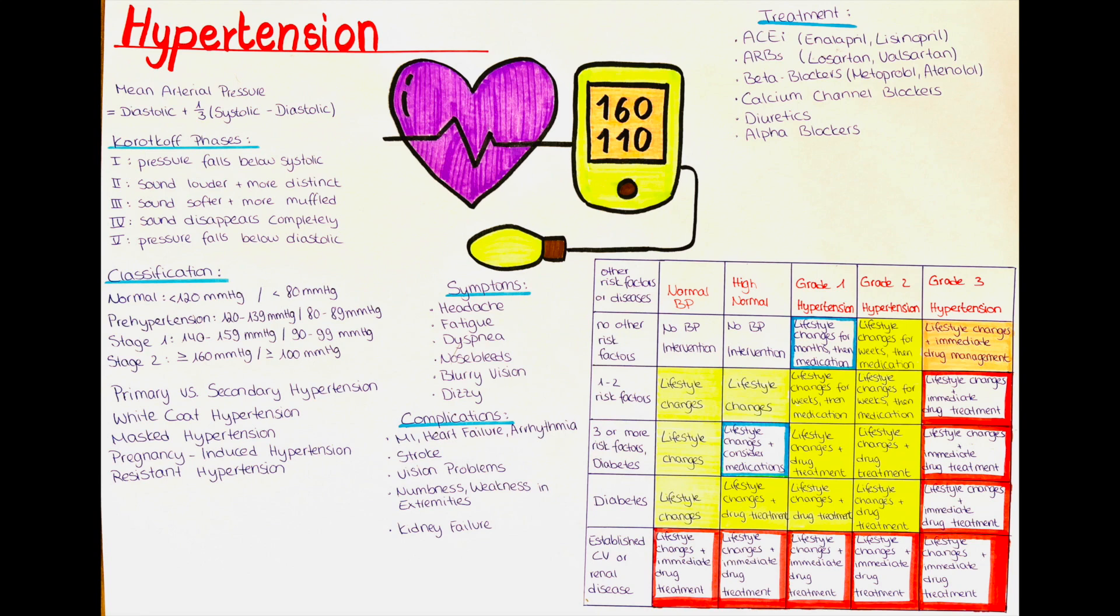Choosing the right medication and dosage is crucial. For mild elevation of blood pressure and low cardiovascular risk, starting with a single agent at a low dose is common. If that's not sufficient, switching agents or increasing the dose is considered. In cases of marked blood pressure elevation or multiple risk factors, combination therapy may be initiated from the get-go.